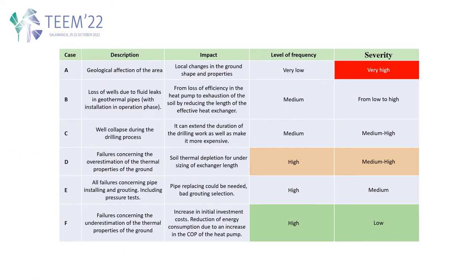Here you can see a chart of the possible outcomes compiled. We are going to have a brief look at case A, because of its severity; case E, because it's quite frequent and it may also be severe for the installation; and case F, that under certain circumstances can be considered a success.